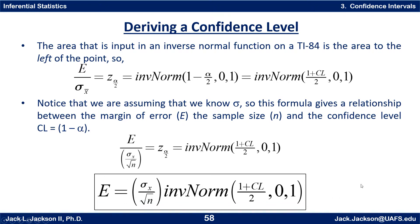Solving for e, we get e equals sigma sub x divided by the square root of n, times the inverse norm of 1 plus confidence level over 2, with mean 0 and standard deviation 1. This formula is the relationship among all the variables. Notice that sigma sub x is the standard deviation of the individuals, which is assumed known and given. So there are really three variables: the confidence level, the sample size, and the margin of error. If we know any two of those, we can solve for the third. This version is solved for e to find the margin of error.